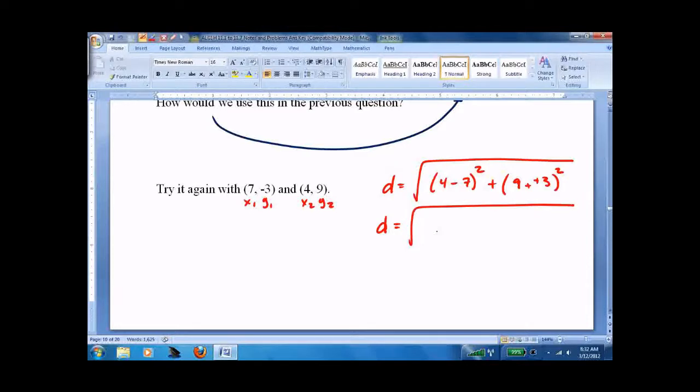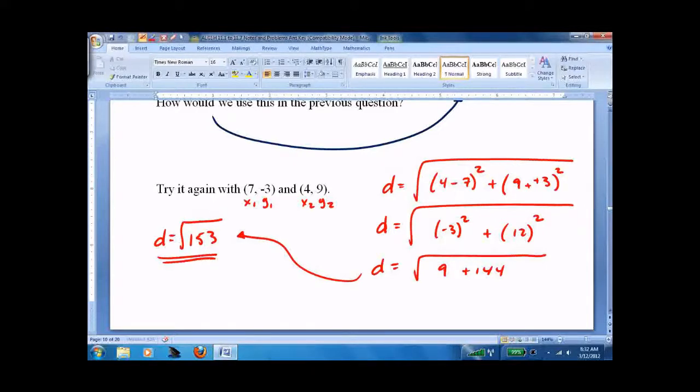d equals square root of 9 plus 144. d equals square root of 153. Done, yes? No. Why not? Because we can reduce it. How did I know that 9 went into it? Because 5 plus 3 plus 1 is 9. Popped it in the calculator. Found out it's reducible.